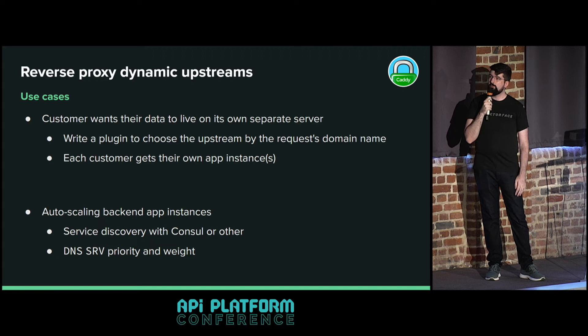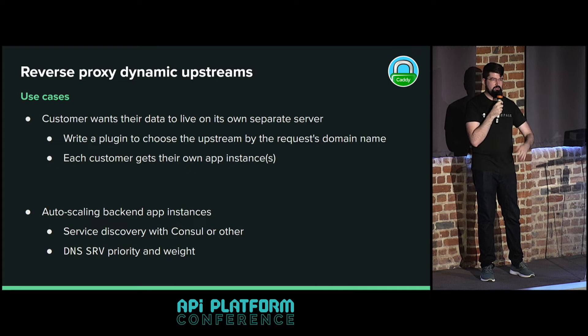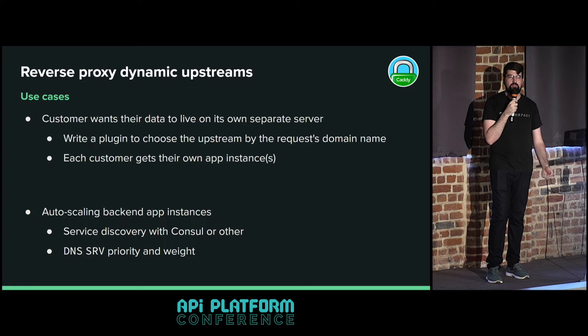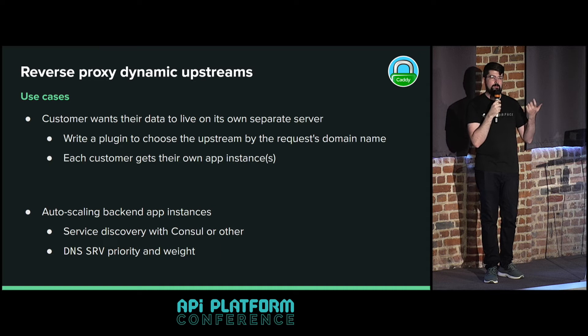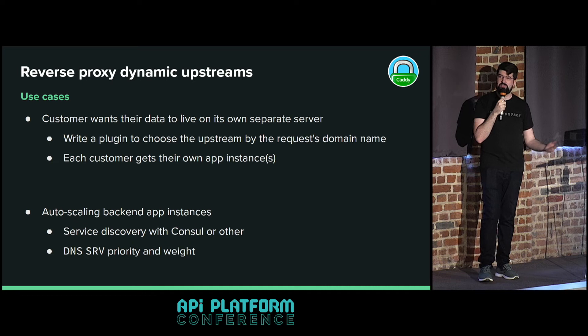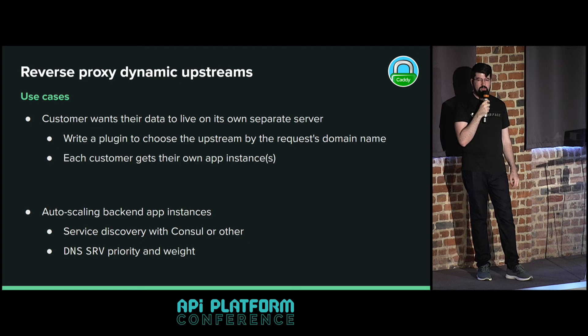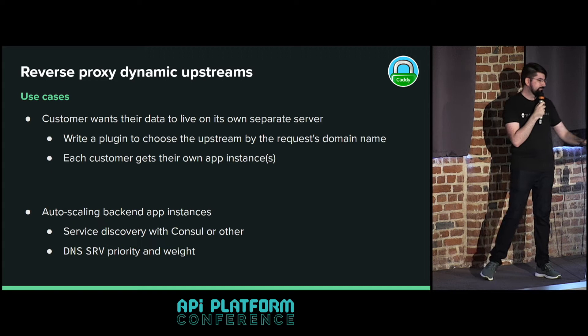Here are a couple of use cases for dynamic upstreams. You might have a customer who wants their data on their own server to avoid data leaking across tenants. With a dynamic upstream plugin, you could choose a specific upstream by the request domain name, giving each customer their own app instances. You could also enable autoscaling for your back-end app instances using service discovery with Consul, so if demand increases, Caddy can proxy to the automatically started instances.